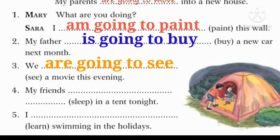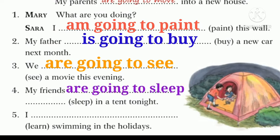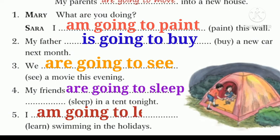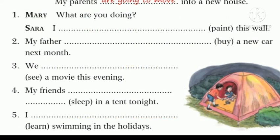I think it's really easy to do this type of exercise. Why? Because you already know the usage of IS, AM, ARE. You can simply put IS, AM, or ARE with the correct subject with a proper verb form. My friends — friends is plural — so my friends are going to sleep in a tent tonight. And next one, very easy: I am going to learn swimming in the holidays. It's really easy to understand how we use GOING TO in the sentences.